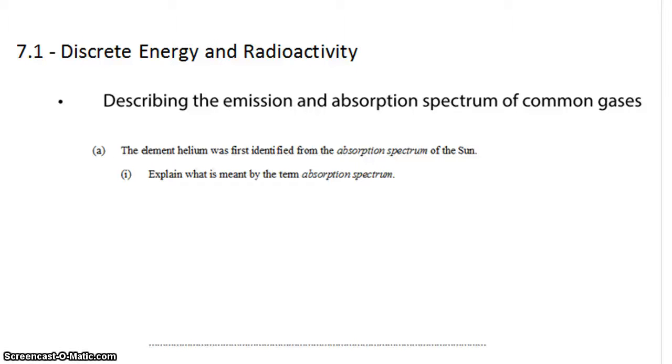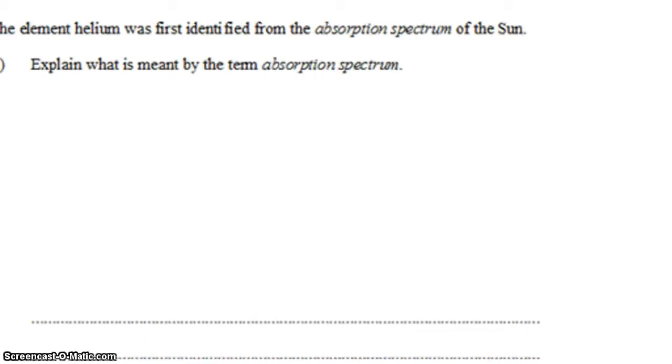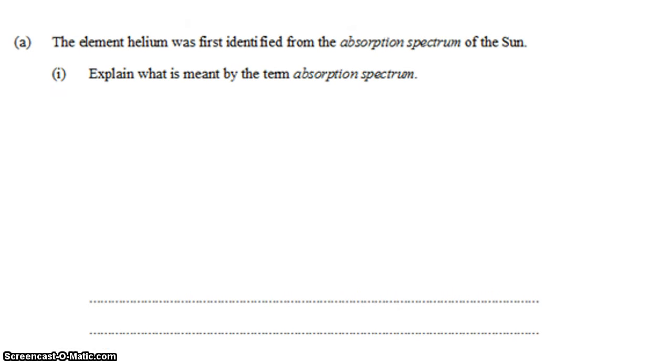David Cain here with another IB question in topic 7.1. We're looking at the properties of the spectrum of light, and we're looking at absorption spectrum in this case. We have a question about the element helium. It was first identified from its absorption spectrum. We want to explain what is meant by the term absorption spectrum.